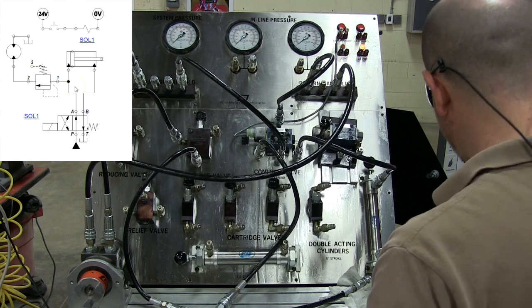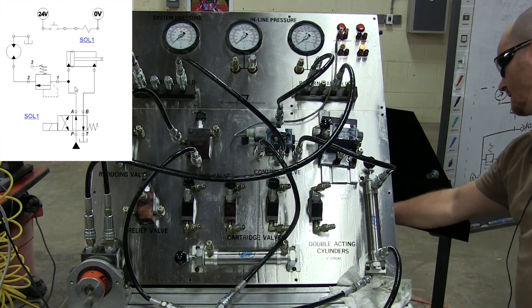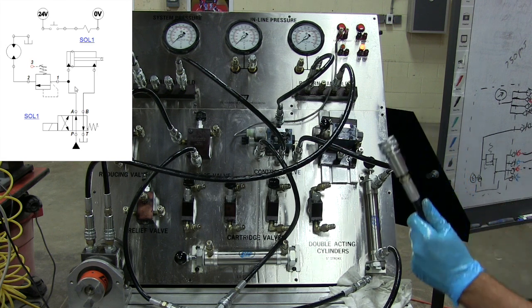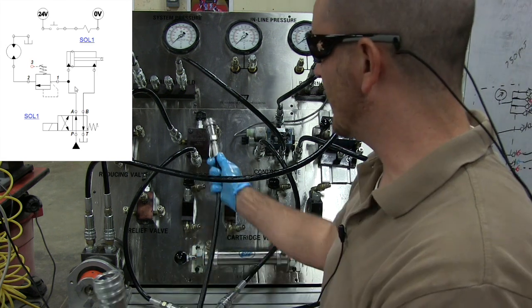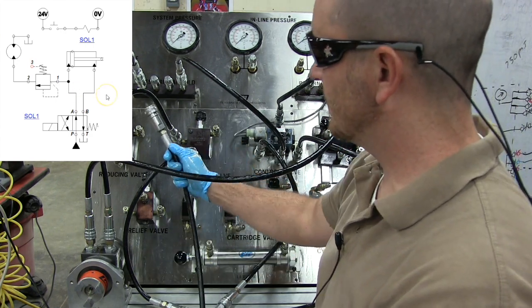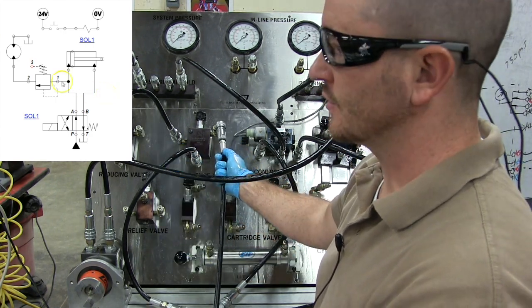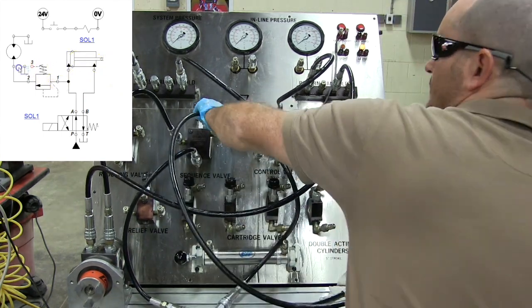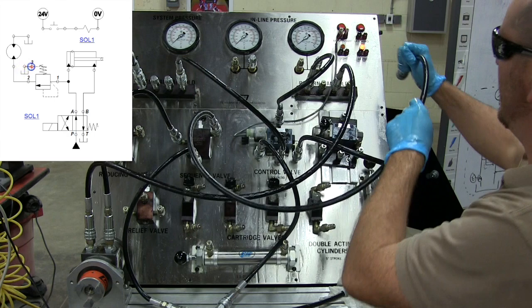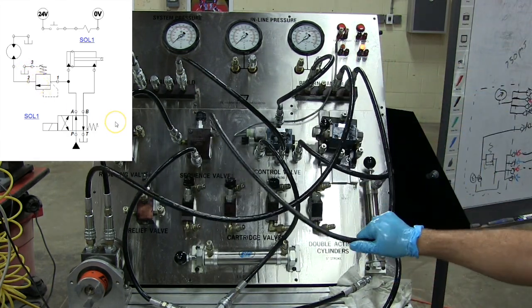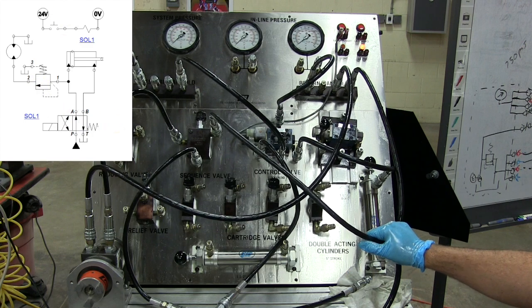Now, our sequence valve, their output goes to a pressurized area. So that means, just like the pressure reducing valve, there is an external drain on here that has to be hooked up. So we're going to come to our external drain here, back up to our return manifold. And this system is set and ready to go.